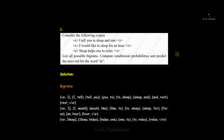Hello everyone, welcome back to my YouTube channel. In this video we'll be looking into one of the previous year frequently asked questions from natural language processing. The question says we need to consider the following corpus — a collection of sentences included in our training dataset. We are given three sentences. We have to list all possible bigrams, compute the conditional probabilities of all the bigrams, and then predict the next word for the word '2'.